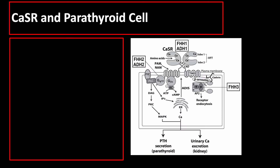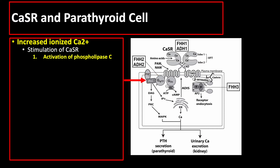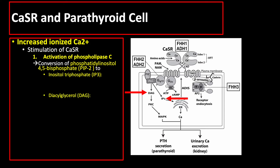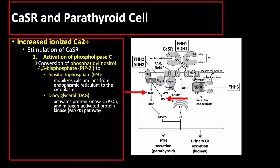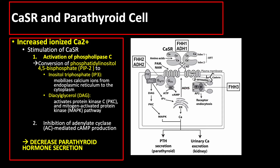In the parathyroid gland, high levels of ionized calcium ions bind to and stimulate calcium-sensing receptors found in the cell membrane of parathyroid cells. This results in activation of phospholipase C. Phospholipase C hydrolyzes and converts phosphatidylinositol-4,5-bisphosphate to inositol triphosphate and diacylglycerol. Inositol triphosphate mobilizes calcium ions from internal stores like the endoplasmic reticulum, while diacylglycerol stimulates activation of protein kinase C and mitogen-activated protein kinase pathway. Another effect of calcium-sensing receptor is inhibition of adenylate cyclase-mediated cyclic AMP production. All these signaling events cause a decrease in parathyroid hormone secretion.